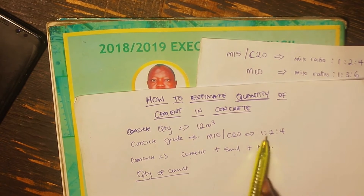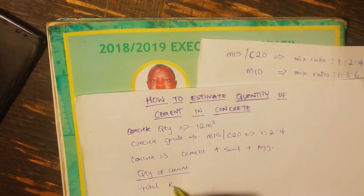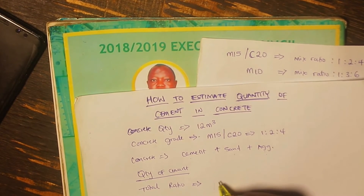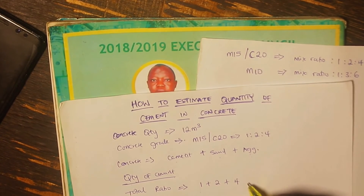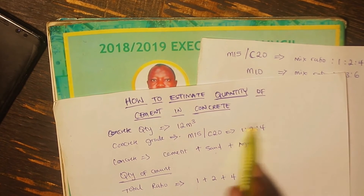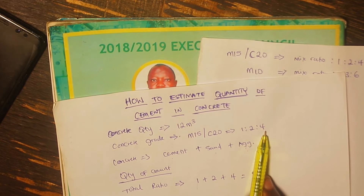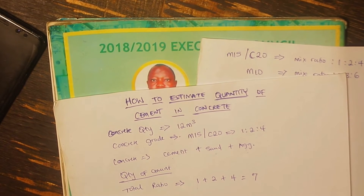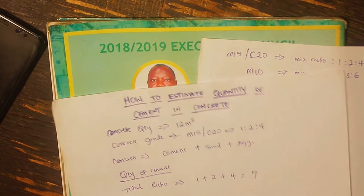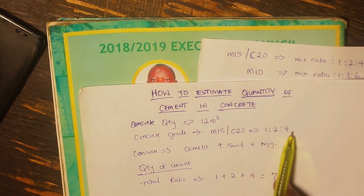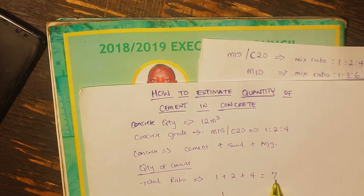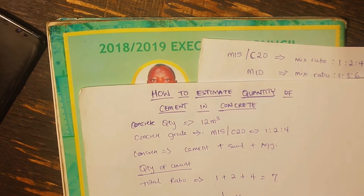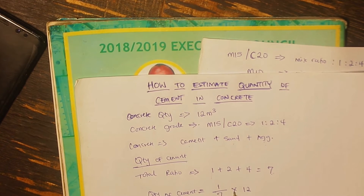To get the quantity of cement, I need to first deal with the proportion. So I'm going to calculate the total ratio. The ratio is 1:2:4, so it's going to be 1 plus 2 plus 4, and the total ratio is equal to 7. From this ratio, the first number represents cement, the second represents sand, and the last one represents aggregate. What we are looking at is the quantity of cement, so I'm going to be dealing with 1. The quantity of cement is going to be equal to 1 out of 7 — because the total ratio is 7 — multiplied by the total quantity of concrete, which is 12 cubic meters. That will give me the quantity of cement, but that will be the quantity of dry cement.